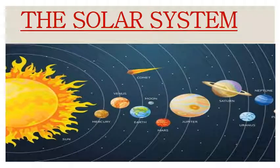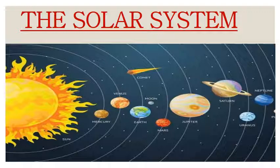Dekho, jaisi yeh picture mein show kiya gaya hai — there is a sun. Sun ke around, jaise mein aapko bataya, woh 8 ke 8 planets ghoomte hain, chakkar lagate hain. Unhein hum solar system kehte hain. Dikhaya gaya hai: Sun, Mercury, Venus, Earth, Mars, Jupiter, Saturn, Uranus and Neptune. These all are the 8 planets, aur unke saath kuch satellites bhi dikhaye gaye hain. In sab ke milne se solar system banta hai.